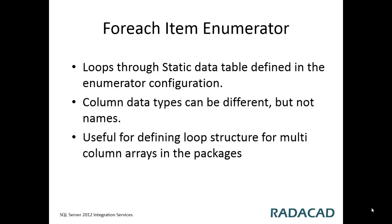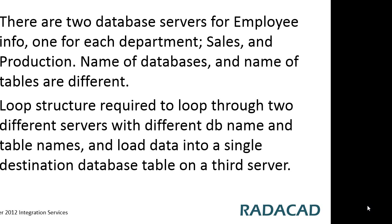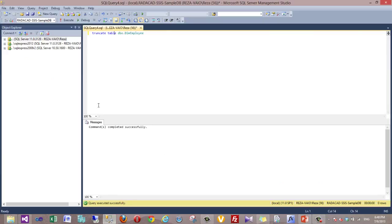For example, I use this scenario: we have two database servers for employees. Assume that each department has its own employee database table. One database is for production, another is for sales. These are on two different database servers and the names of databases and tables are different. We want a loop structure to loop through these different servers, connect to each different database name and table name, and fetch that information into a third database server — an integrated employee table.